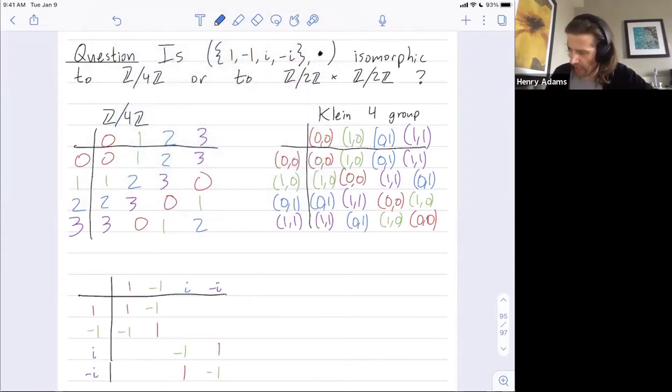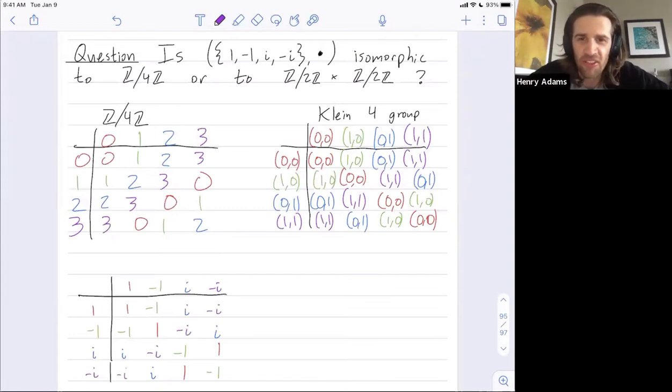Where are the i's in this table? Well, 1 times i or negative i times negative 1. And where are the negative i's in this table? Well, negative i times 1 or i times negative 1. So either out loud or in the chat, any guesses yet what group this is isomorphic to, z mod 4z or the Klein-4 group?